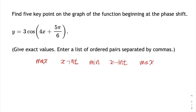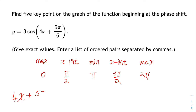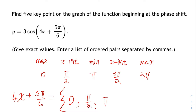Those five key points occur when the angle is equal to 0, pi over 2, pi, 3 pi over 2, and 2 pi. So what we're going to do is figure out where the angle 4x plus 5 pi over 6 equals each of those numbers: 0, pi over 2, pi, 3 pi over 2, and 2 pi.